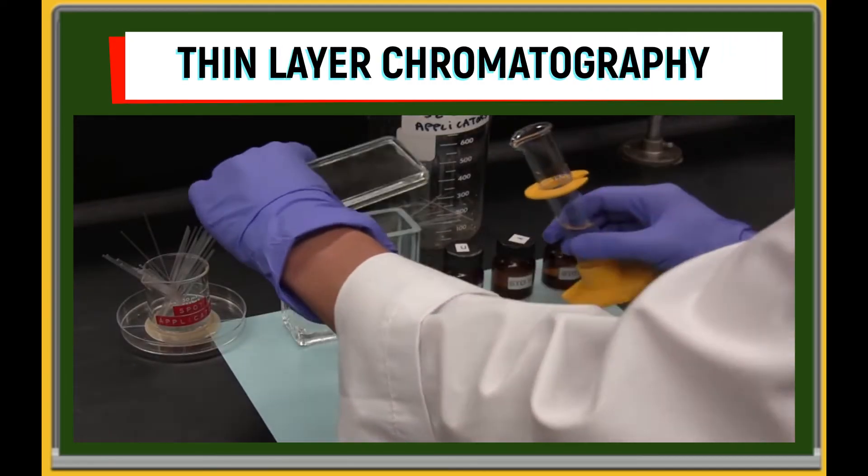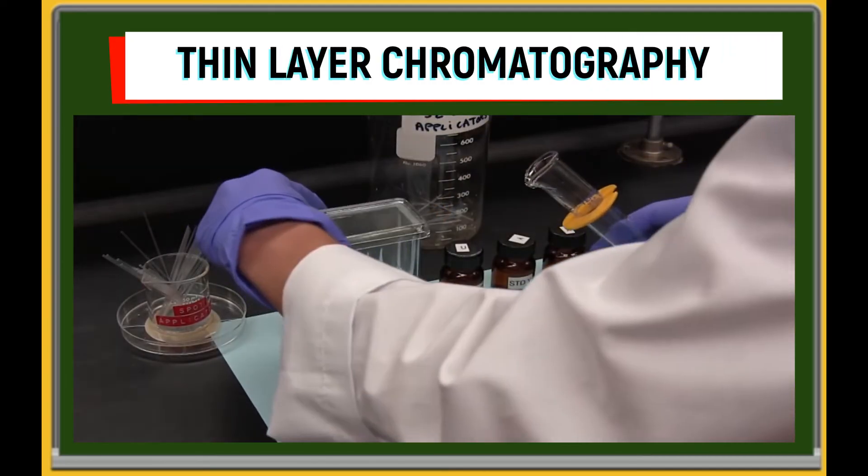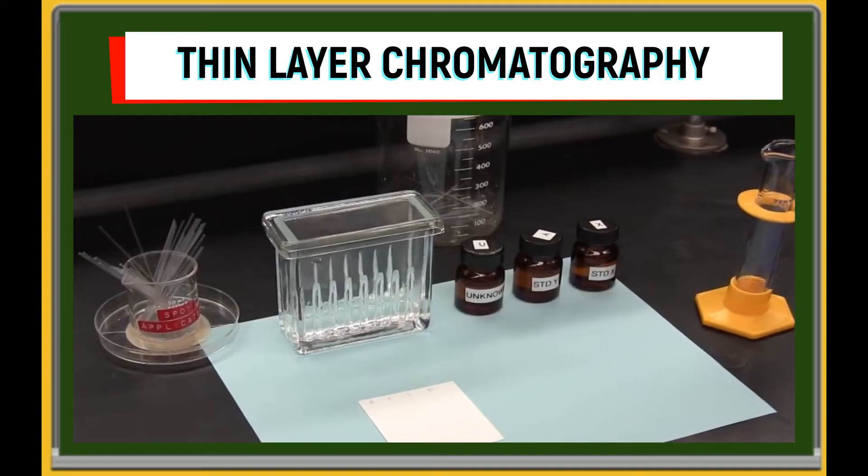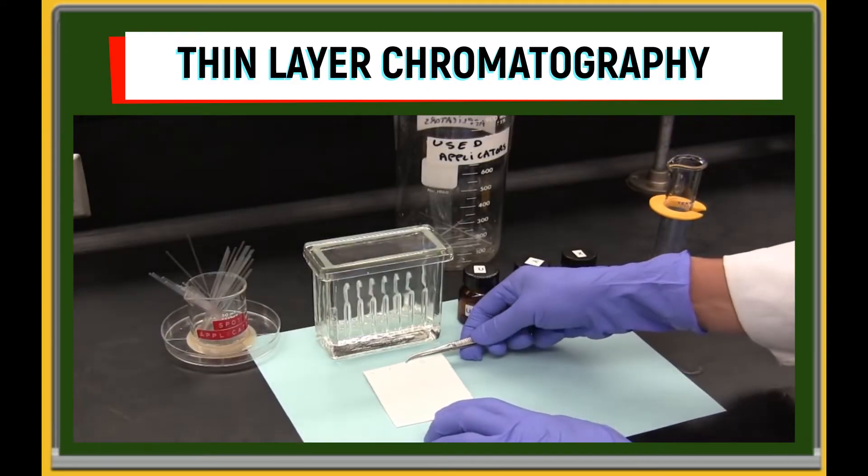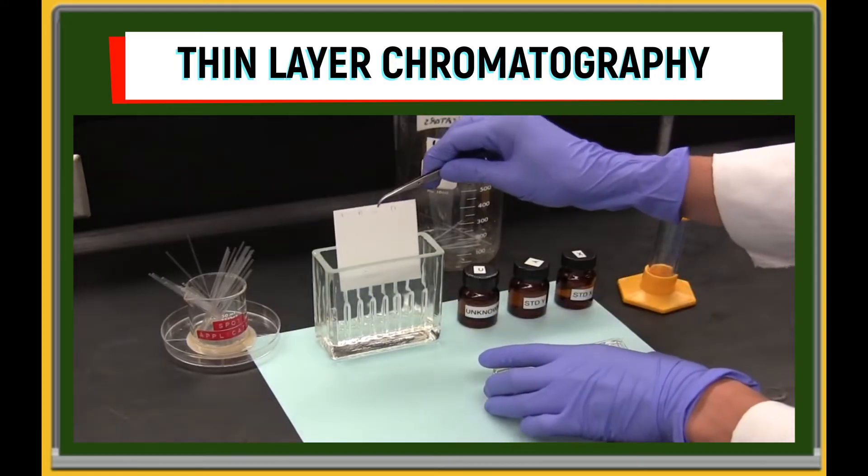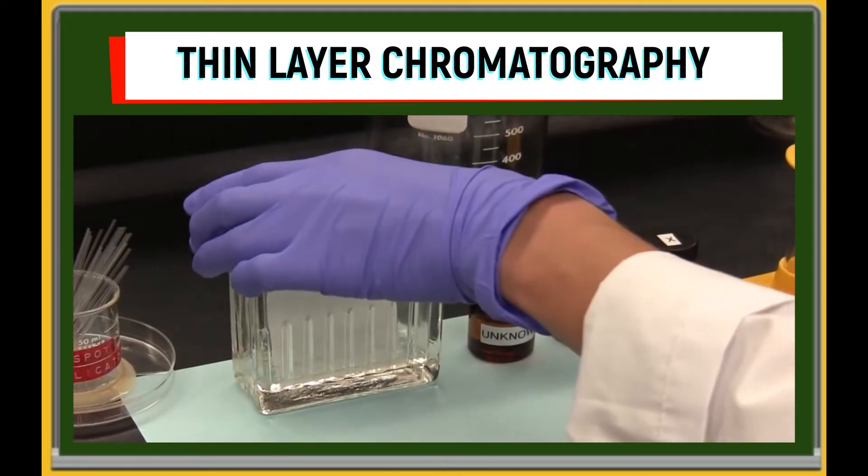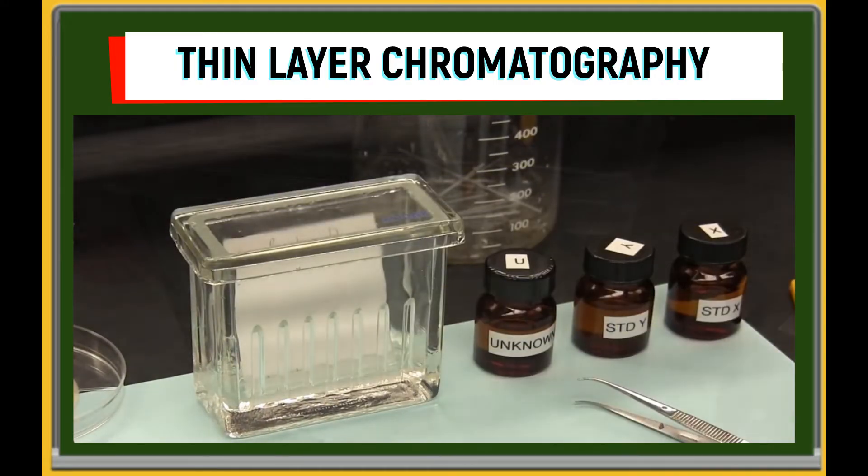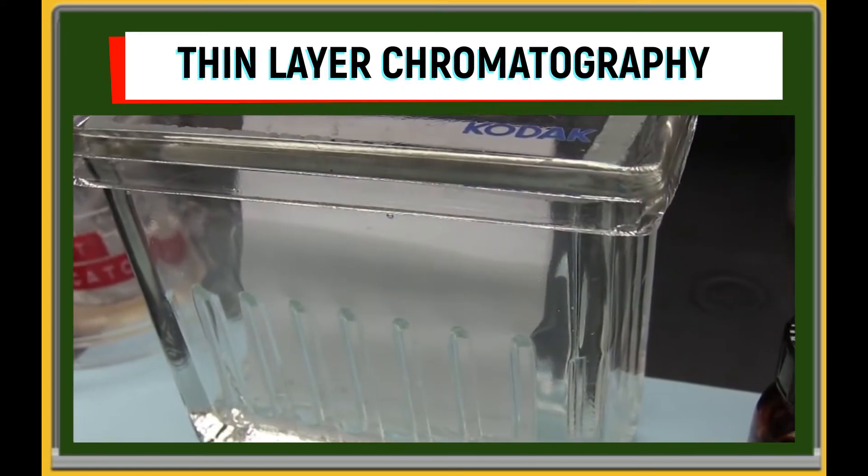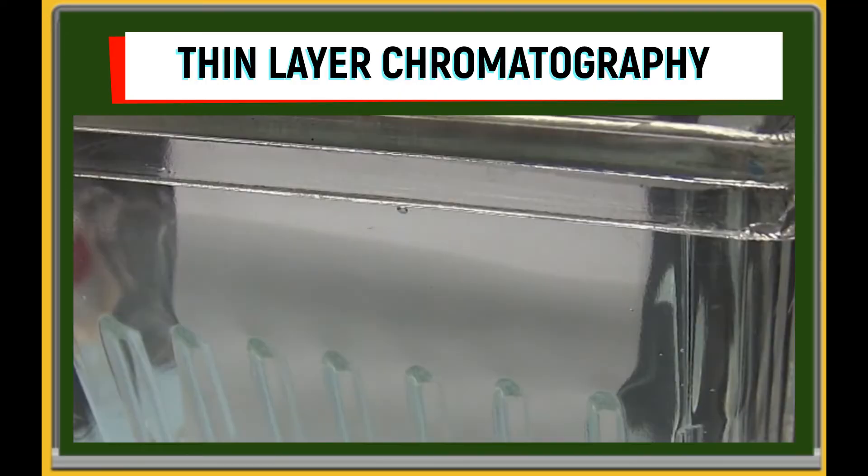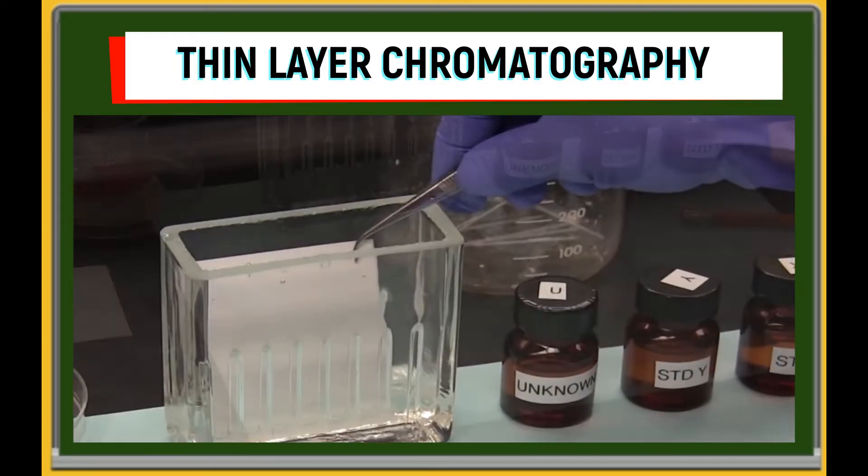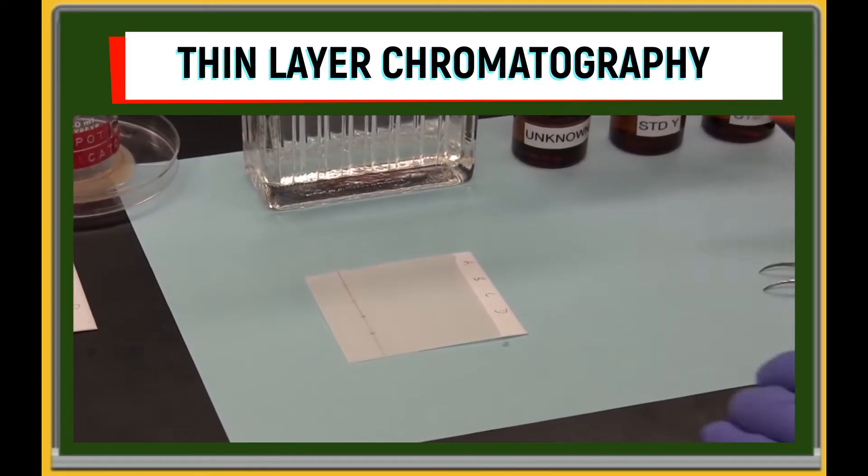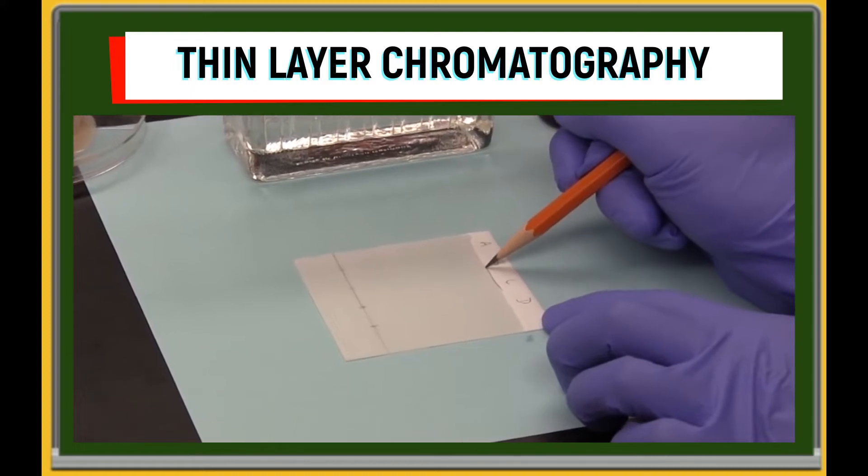A solvent is poured into our developing chamber. This is our mobile phase. We place our spotted TLC plate inside the chamber. In a span of time, you will notice our solvent traveling up and in time, you will see a boundary between a wet and dry plate known as the solvent front. When the solvent front is close from the top of the plate, the plate is removed and a line is drawn marking the solvent front.